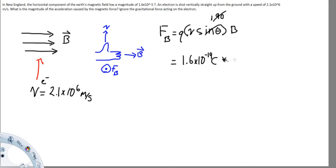Times the velocity, 2.1 times 10 to the 6th meters per second, times the magnetic field which is 1.6 times 10 to the negative 5 tesla.